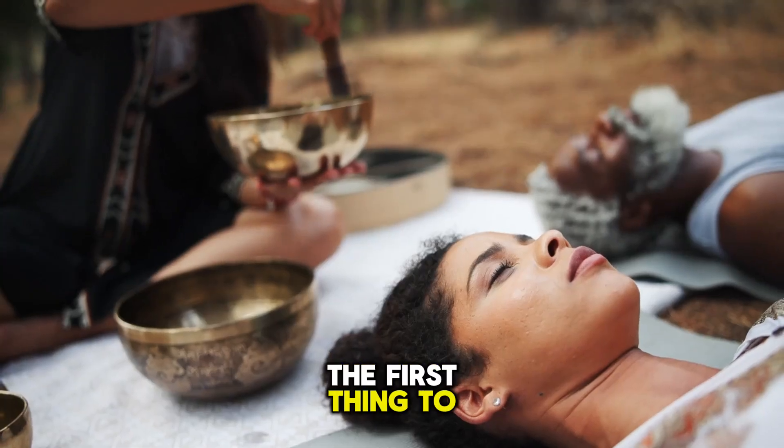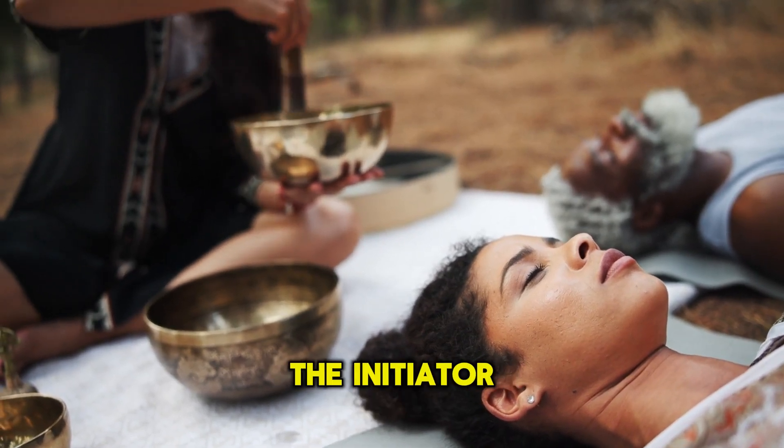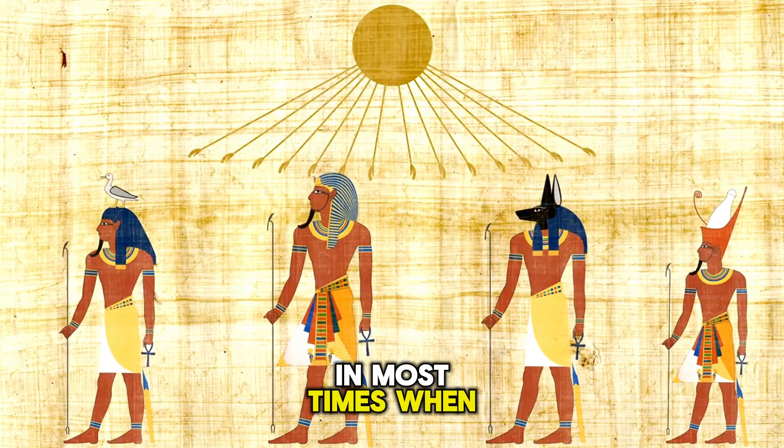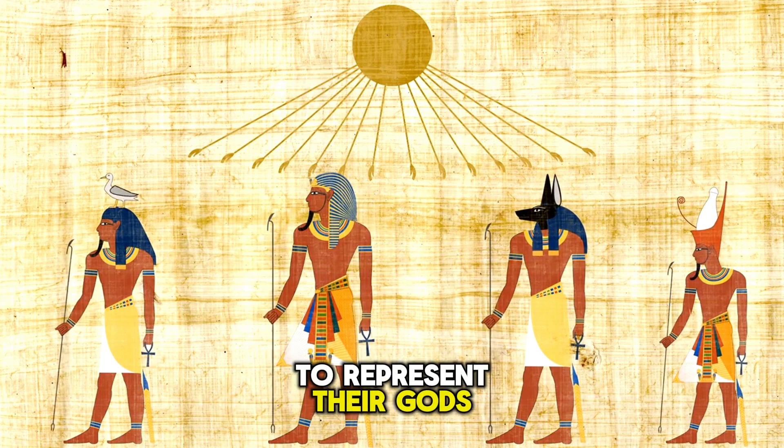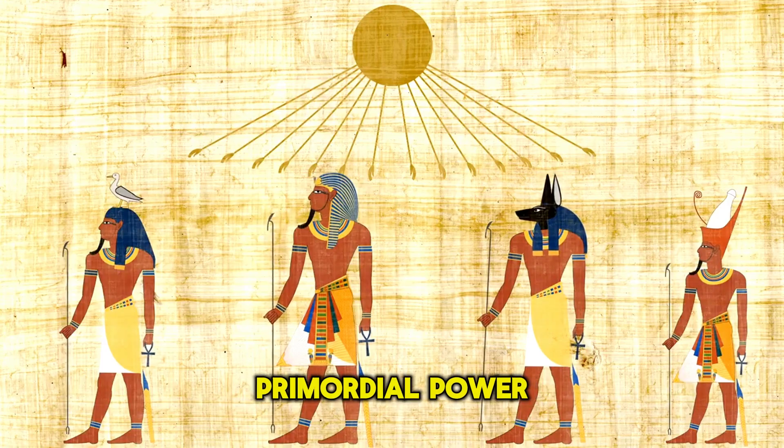The first thing to be aware of is that this first being in particular was considered to be the initiator of the spiritual culture of Egypt. Most times when the Egyptians would use the heads of animals to represent their gods, it represented a state of consciousness and a type of primordial power.